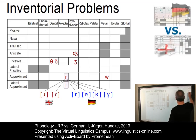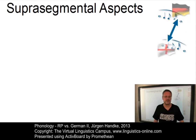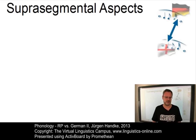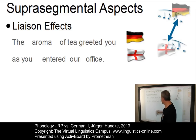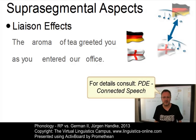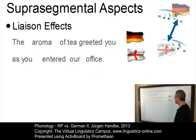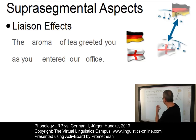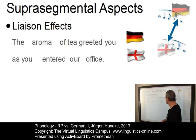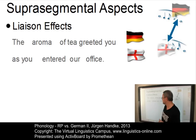Let us now look at some selected suprasegmental aspects. The central suprasegmental problem for German learners concerns the connected character of RP — for example, liaison effects. Germans tend to insert glottal stops between two words where the second one starts with a vowel. A typical German mistake would be: 'The aroma of tea greeted you as you entered our office' with a glottal stop in front of each word that starts with a vowel.